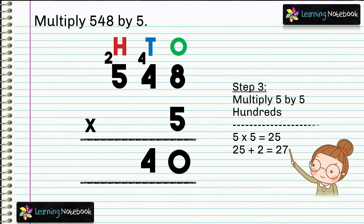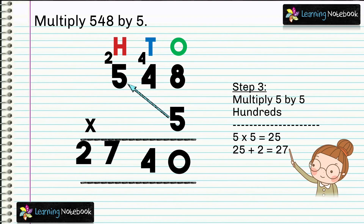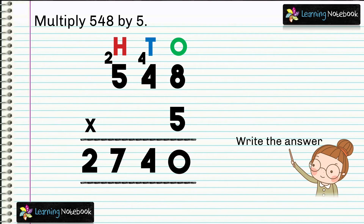Now in step 3, multiply 5 by 5 hundredths, which means 5 into 5 equals to 25. We also have 2 as carry due to regrouping at tenths place. So let's add that carry to 25. 25 plus 2 equals to 27. So we get the product as 2740. 548 into 5 equals to 2740.